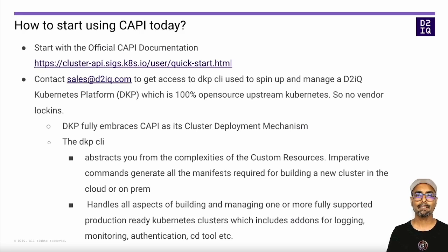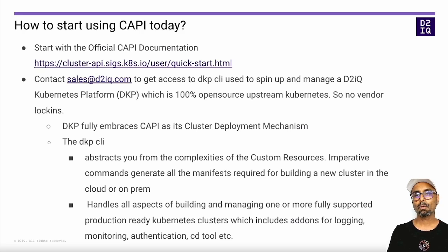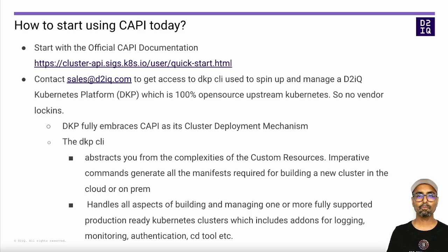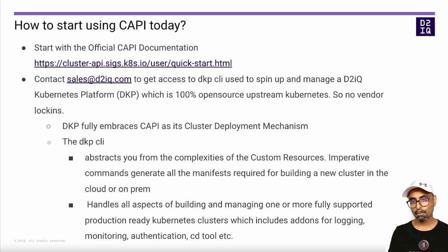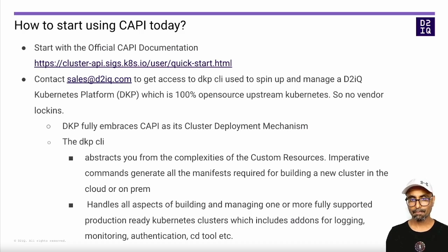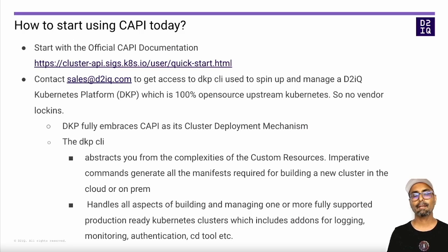The DKP CLI lets you generate the CAPI resources for the given provider that work for 80% of the scenarios, following best practices for each, and also gives you flags to override many of these parameters. For deploying Kubernetes clusters, it gives you the option to create a new bootstrap kind cluster or deploy CAPI components on an existing Kubernetes cluster. You can then apply the generated manifests to spin up one or more Kubernetes clusters using CAPI, followed by deploying add-on components for monitoring, logging, authentication, continuous delivery, etc., giving you fully supported production-ready Kubernetes clusters.